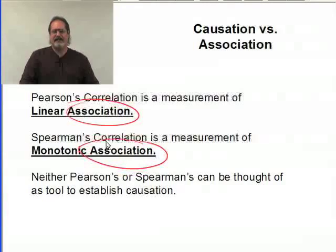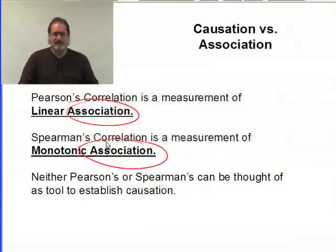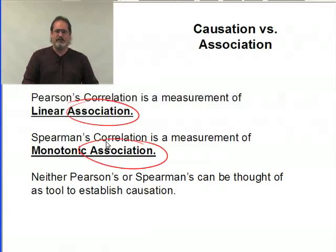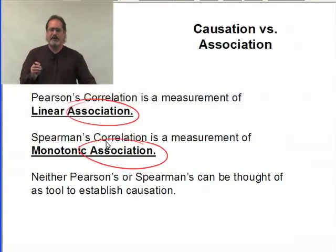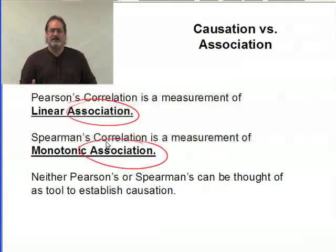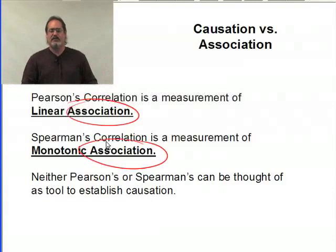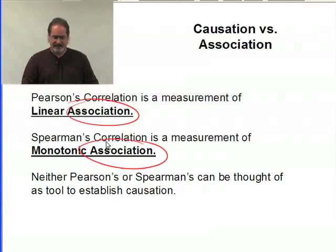Some data analysts believe that if you can control for all possible confounding variables and what you have left is an association, then you can make that causal jump. Personally, I believe that's probably true, but the hard part is how do you possibly control for every possible confounding factor when you may not even be able to identify some? There can be confounding factors that you know nothing about and have no way of even identifying.